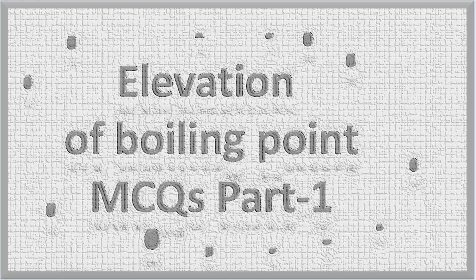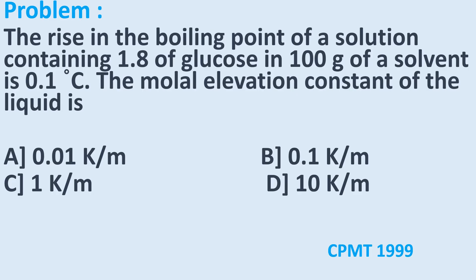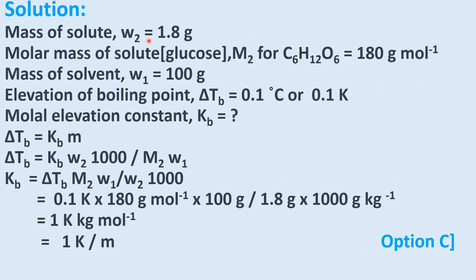Let us discuss some multiple choice questions on the topic elevation of boiling point. The rise in the boiling point of a solution containing 1.8 gram of glucose in 100 gram of a solvent is 0.1 degree Celsius. The molar elevation constant of the liquid is: option A 0.01 K/m, option B 0.1 K/m, option C 1 K/m, option D 10 K/m.